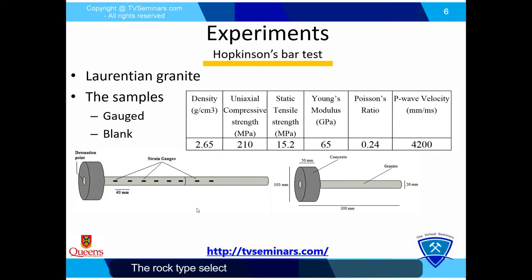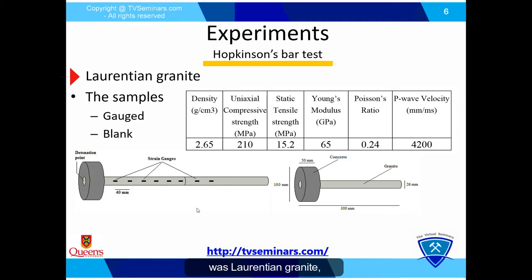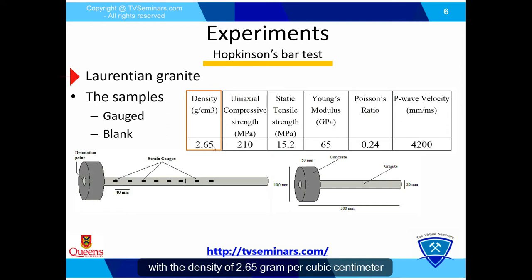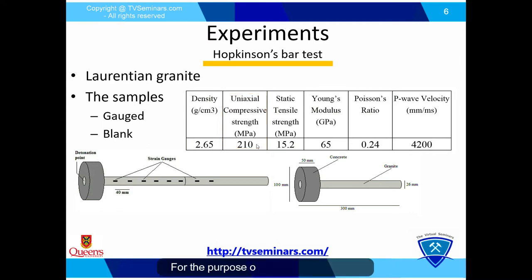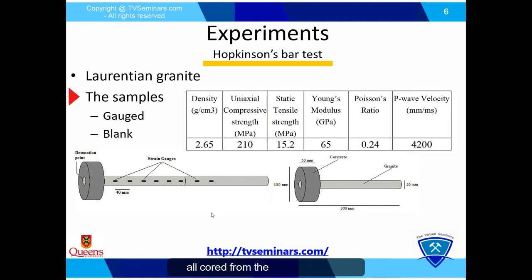The rock type selected for this experiment was Laurentian granite, a fine-grained granite with a density of 2.65 grams per cubic centimeter and a uniaxial compressive strength of 210 megapascal. For the Hopkinson bar tests, we had two sets of samples, all cored from the same rock block.